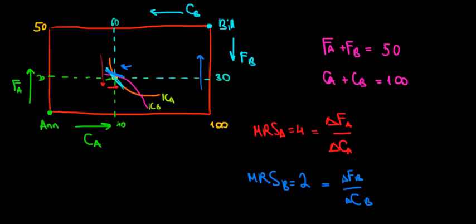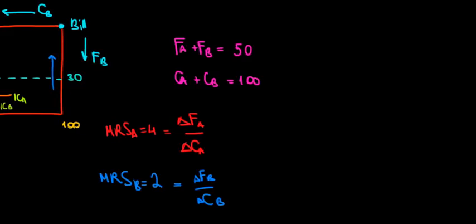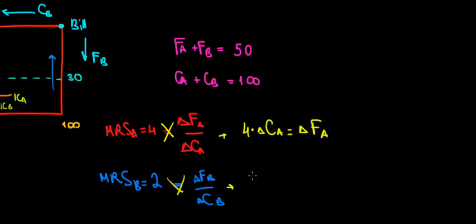Let's do some cross products to see what that means and how trade can work out. We can see that 4 times the change in clothing of N equals the change in food of N. And for Bill, 2 times the change in clothing of Bill equals the change in food of Bill.